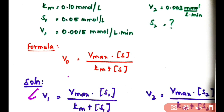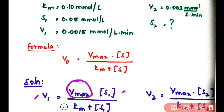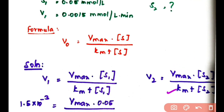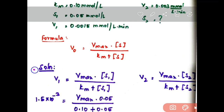To solve this problem, first write the Michaelis-Menten equation for v1, because we know the values for v1, substrate concentration, and Km. Using these values we can calculate Vmax. Then substitute Vmax back into the equation — since we know Km, v2, and Vmax — we can easily calculate S2.